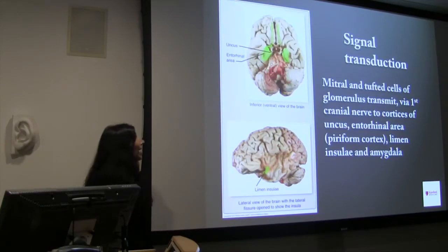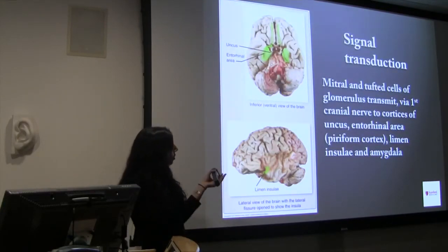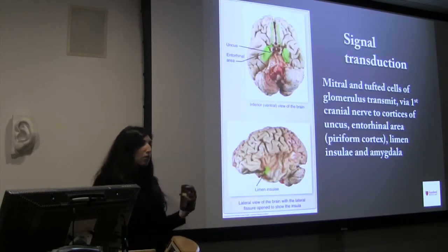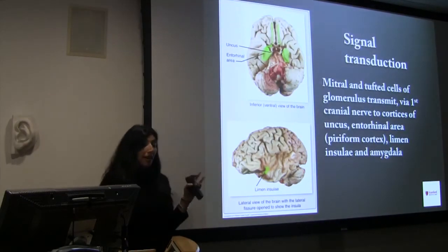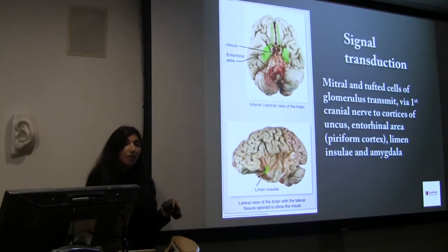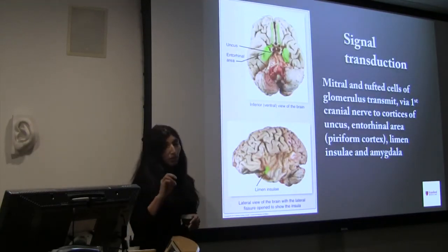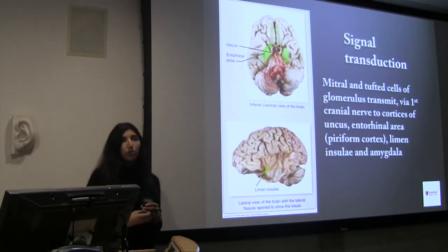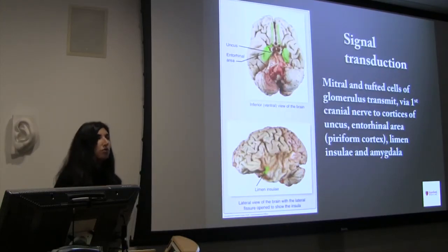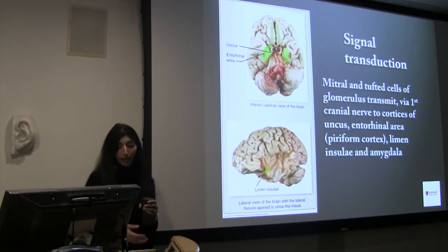Once they leave that olfactory bulb, they go up to different parts of the cortex. The main olfactory area is called the piriform cortex. But interestingly, they also synapse directly in the amygdala. As all of you know, the amygdala is the center of our brain that is emotionally linked to our primal, instinctual flight-or-fight response and our desires.